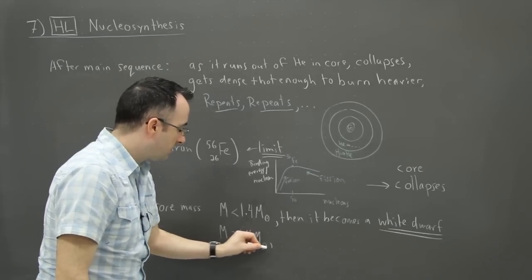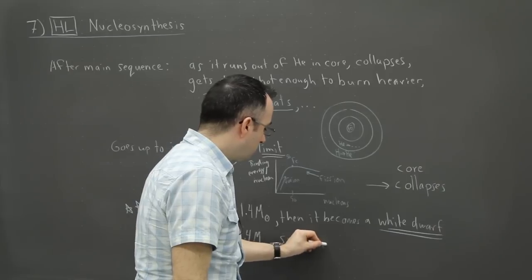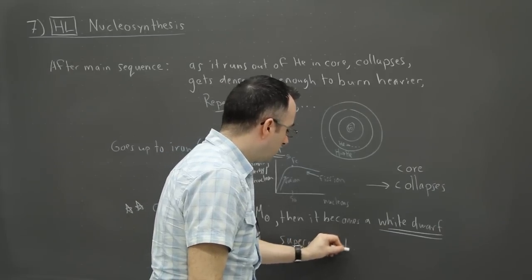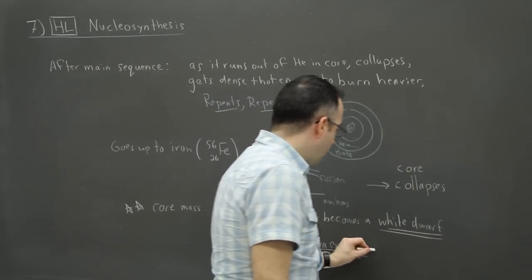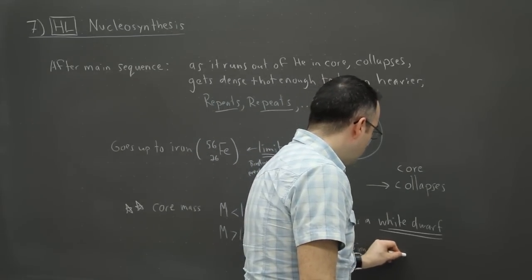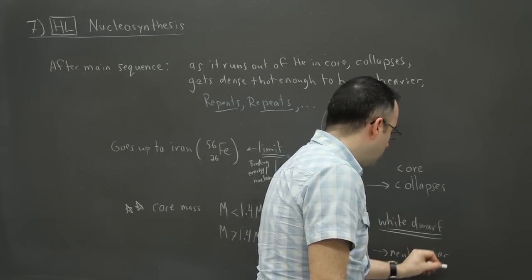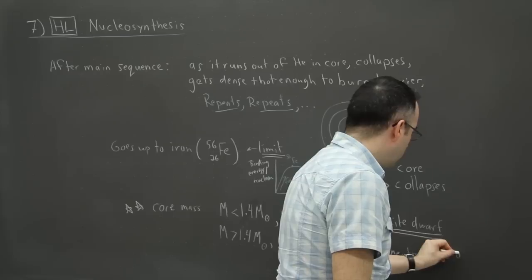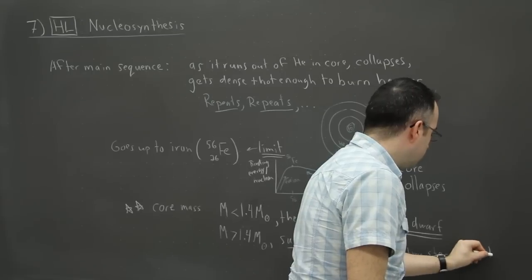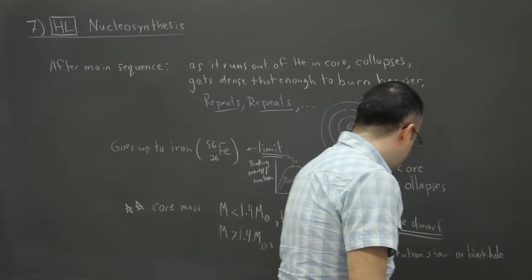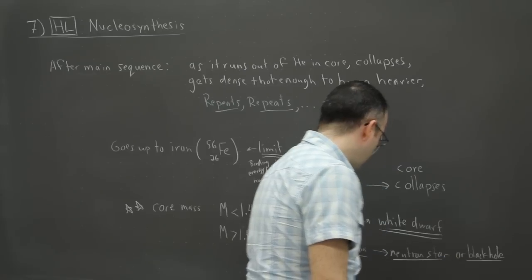But if the mass is greater than 1.4 solar masses, then you get a supernova explosion. This is key here. And then it either makes a neutron star or black hole, which I think is really cool. So that's the end result, depending on what its mass is.